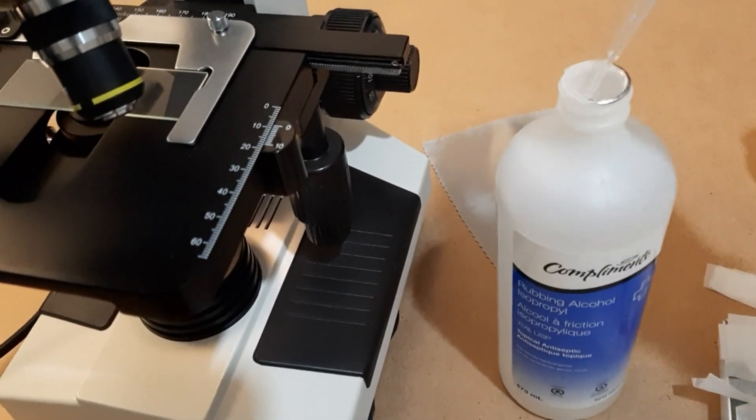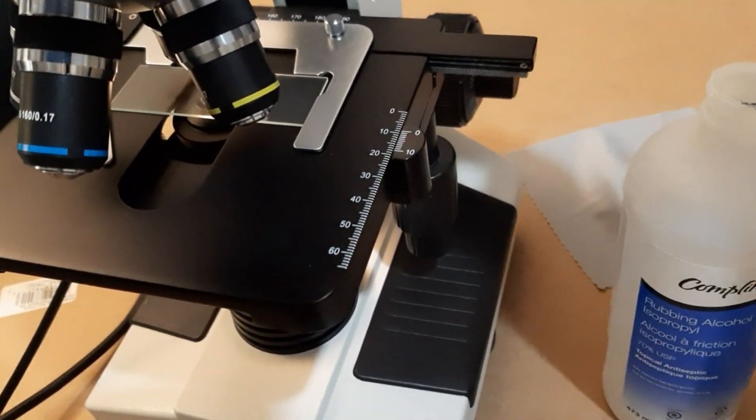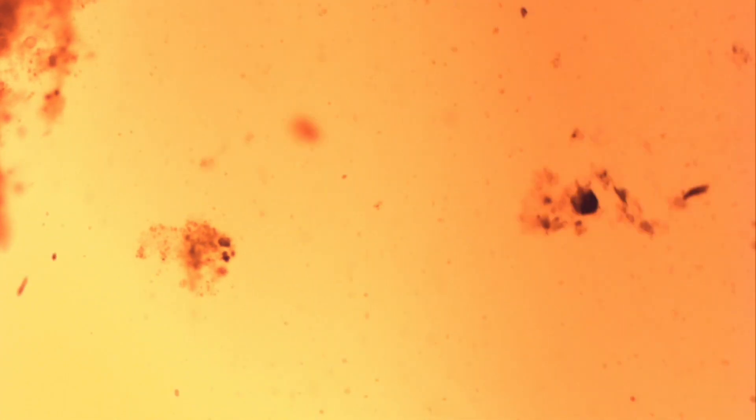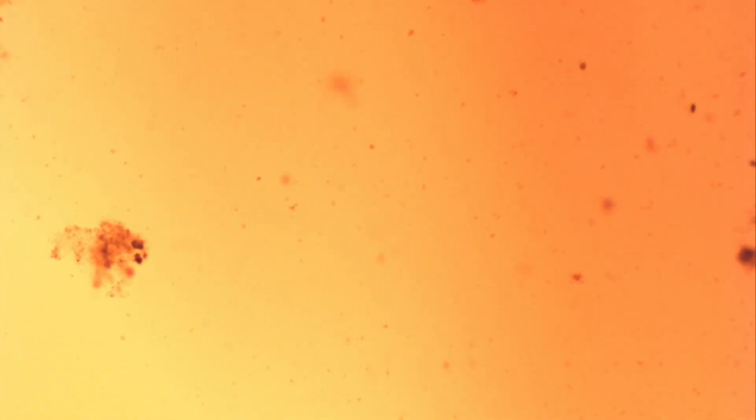Next I try pure alcohol. This is isopropyl alcohol, whereas the active ingredient in sanitizer is ethyl alcohol, but they work more or less the same. This completely changed the viscosity and created massive currents. We didn't get to see very much, but the effects were very dramatic.